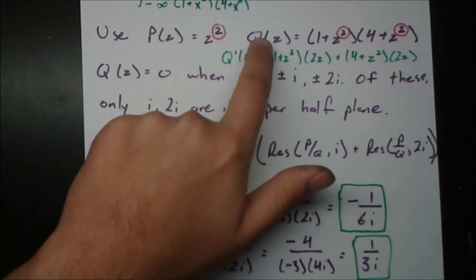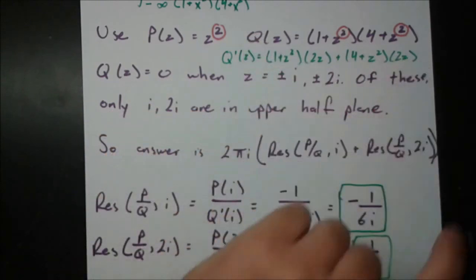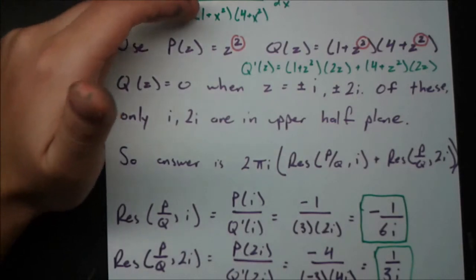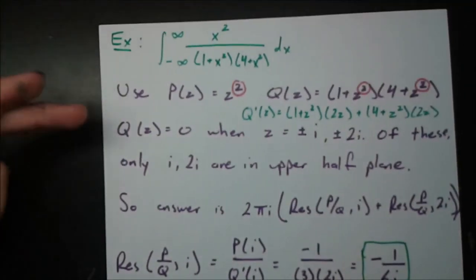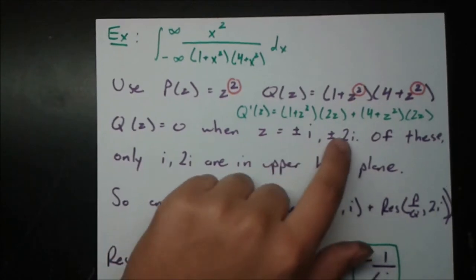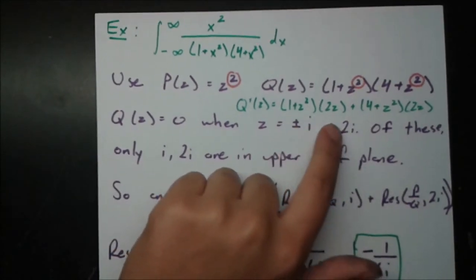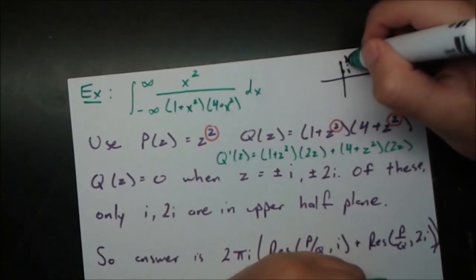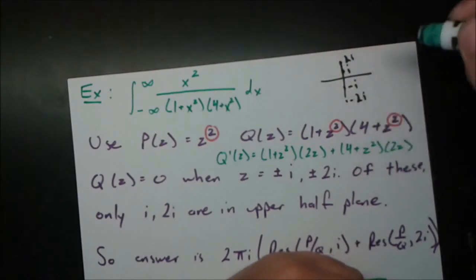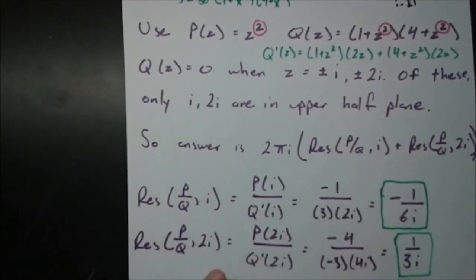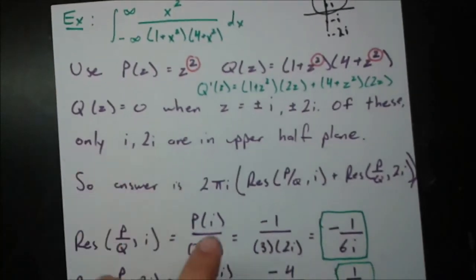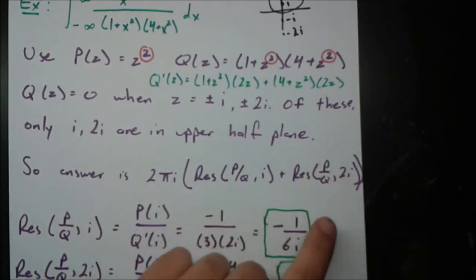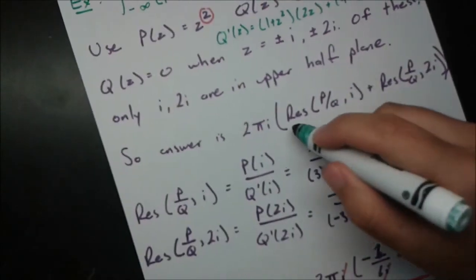We have isolated singularities (poles) where Q(z) = 0, which gives z = ±i and z = ±2i. We only need the ones in the upper half plane: i and 2i. So the answer is 2πi × [Res(P/Q, i) + Res(P/Q, 2i)]. We need to actually evaluate these residues to get a numerical answer.